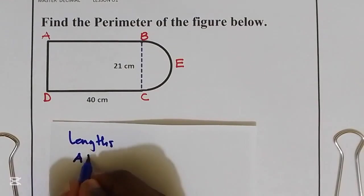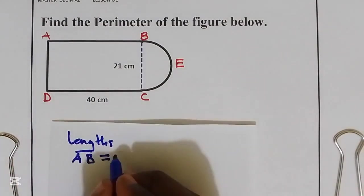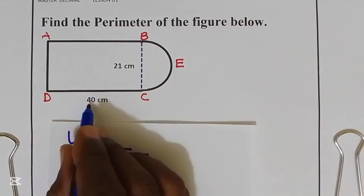From the figure we have length AB which is equal to DC. This is equal to 40 centimeters.